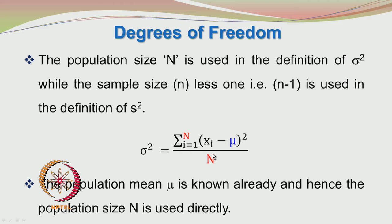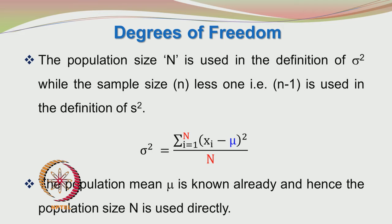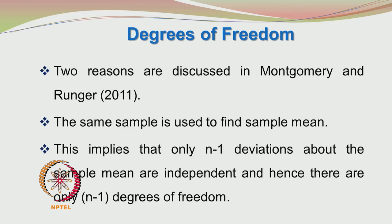In the case of the sample variance, we use the sample itself to find the sample mean, then we use the sample mean to find the sample variance, so the n deviations were not independent and we were forced to use n-1. There is another reason why we use n-1; the two reasons are discussed by Montgomery and Runger.